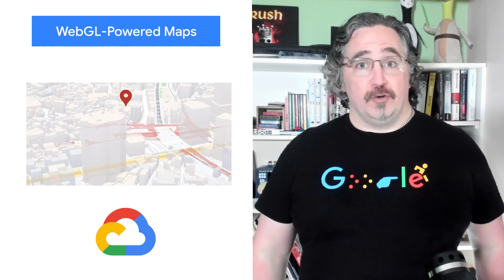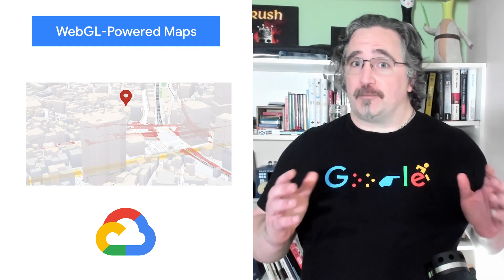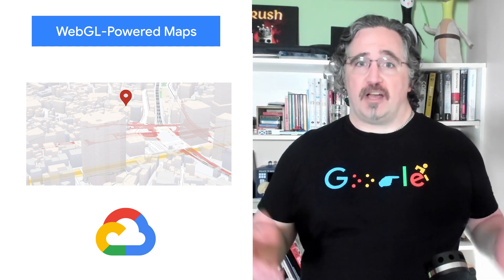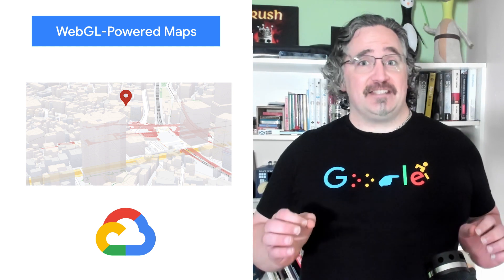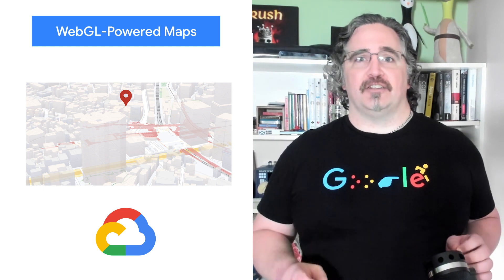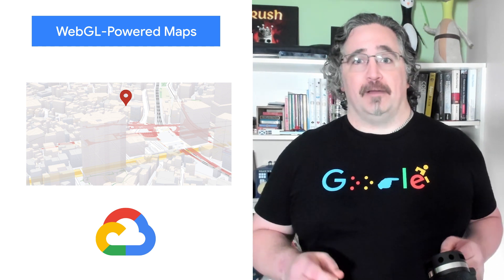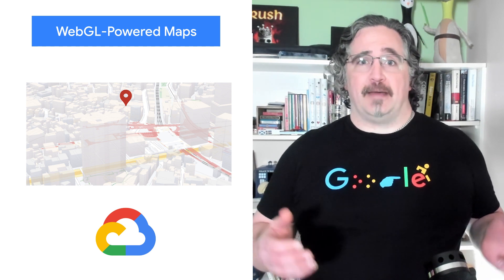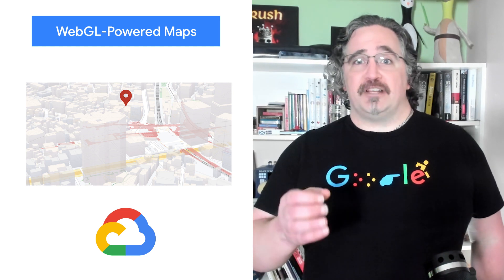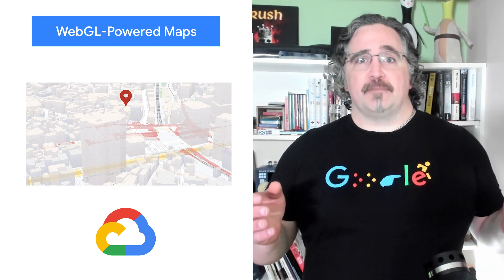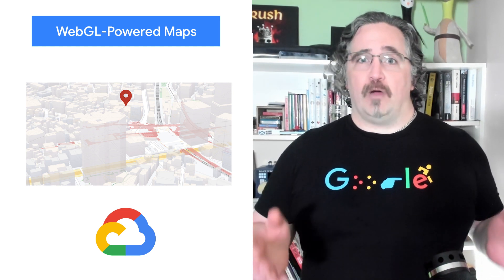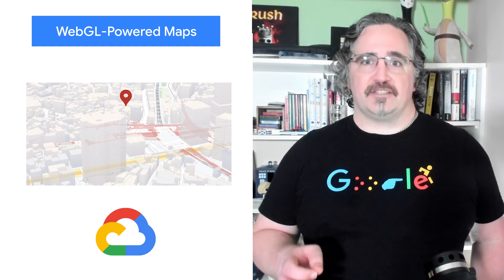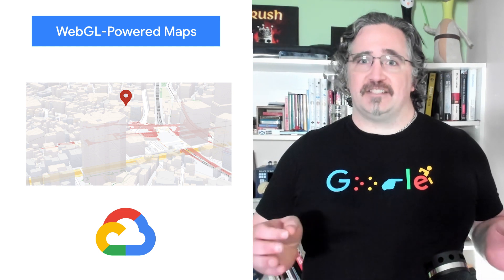At last year's Google I/O, our team announced the preview release of a set of new WebGL-powered maps features for the Maps JavaScript API. These features give you unprecedented control of the vector base map as part of the customization and styling options available with cloud-based maps styling. Now generally available, all this is made possible thanks to the native WebGL APIs that are supported in all modern browsers, giving access to the rendering power of the device GPU.